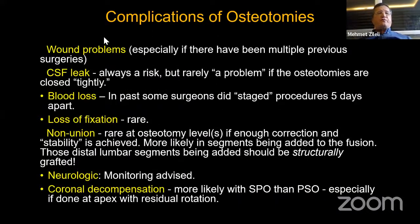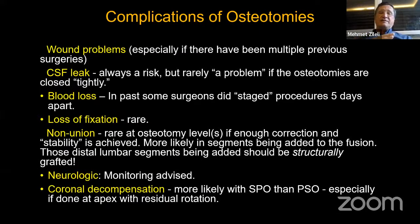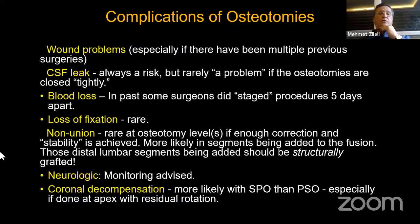What about complications of osteotomies? There are wound problems, especially if the patient had previous surgeries. CSF leak may be a problem. Blood loss is a problem — some surgeries are staging procedures at different times. Loss of fixation is rare, but non-union may happen if you don't get good contact with PSO on the body surfaces you removed. If there is any gap, you must place some autogenous bone inside. To avoid neurologic worsening, you must monitor patients.